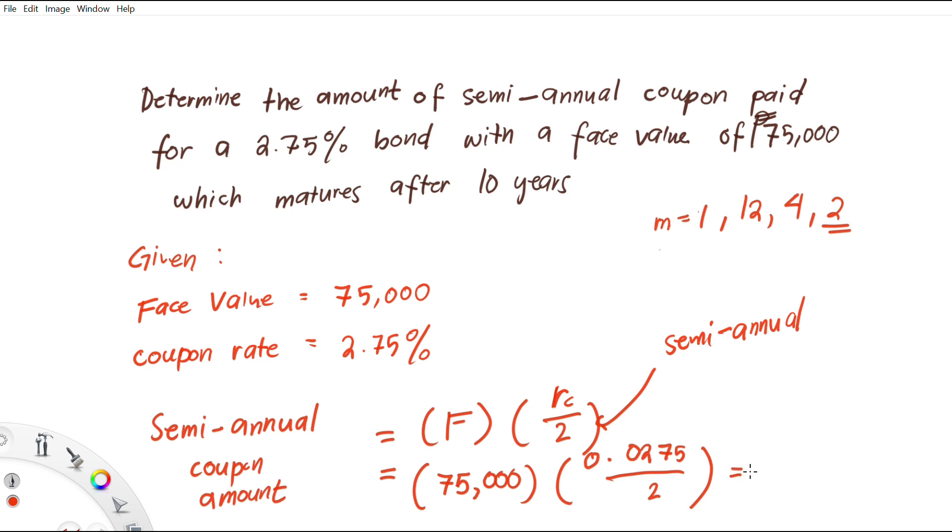So we have this as 1,031.25 pesos. So the semi-annual coupon amount is 1,031.25 pesos.